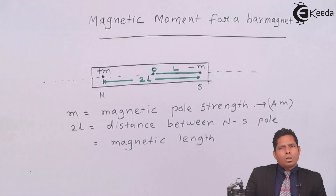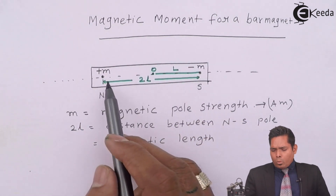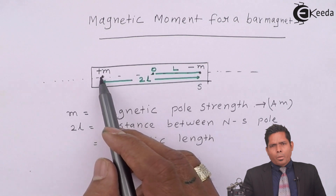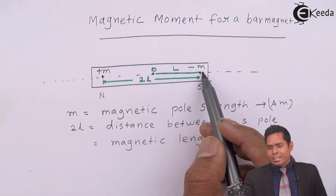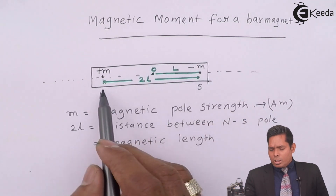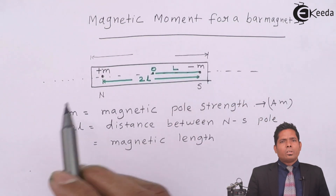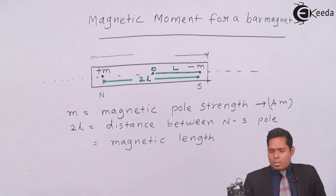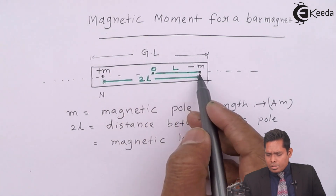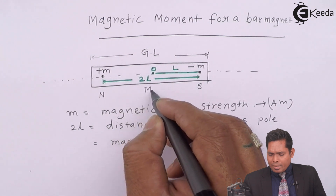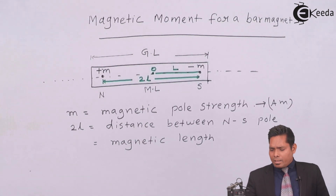This 2l is the distance between the north pole and south pole, and it is technically known as the magnetic length. Now, how do we find the magnetic length? If I have a magnet, how do I locate the north pole exactly, since it lies just inside the endpoint? The actual length of the bar magnet is called the geometric length, and the distance between north pole and south pole is known as the magnetic length.